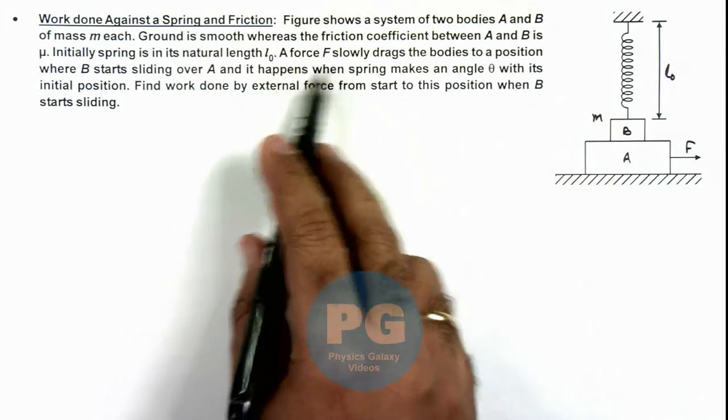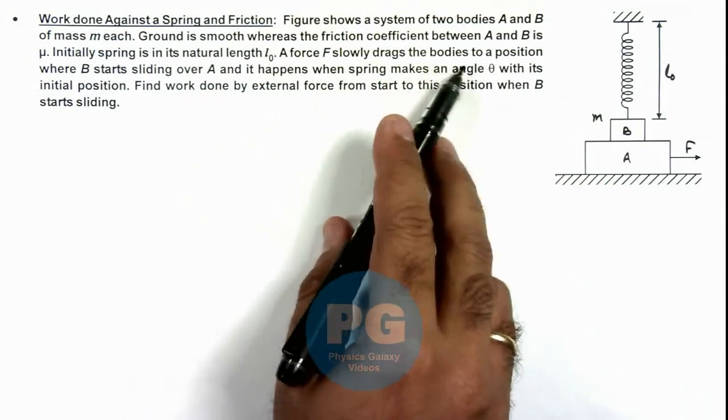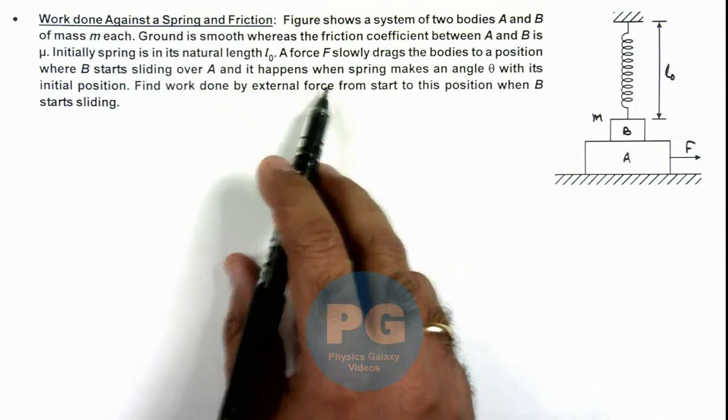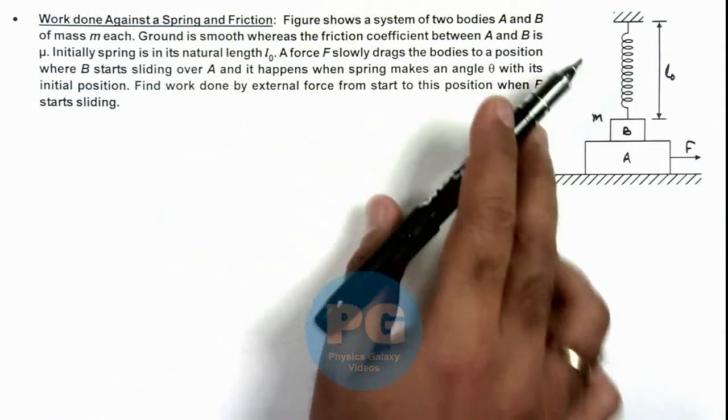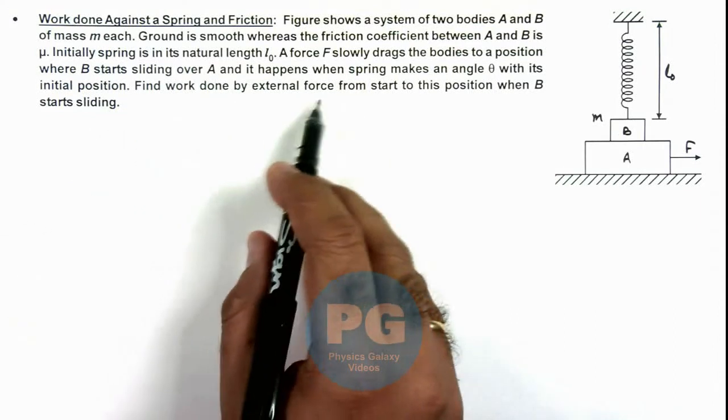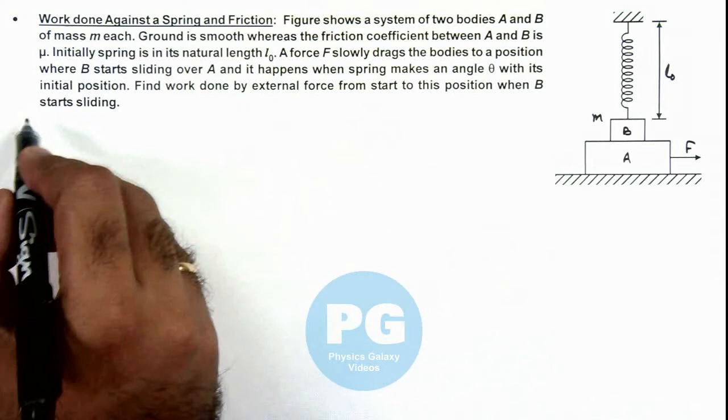A force F slowly drags the bodies to a position where B starts sliding over A, and it happens when spring makes an angle θ with the initial position. We are required to find the work done by external force from starting to this position when B starts sliding.